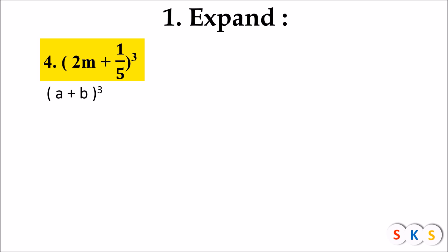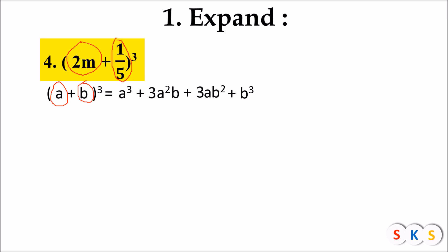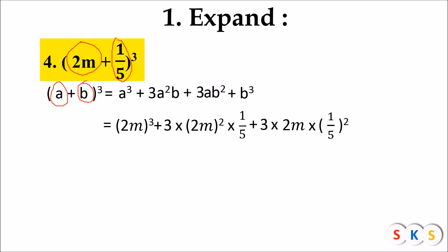Next question: (2m + 1/5) the whole cube. We use the formula (a + b)³ = a³ + 3a²b + 3ab² + b³. Here a = 2m and b = 1/5. Substituting: (2m)³ + 3 × (2m)² × (1/5) + 3 × 2m × (1/5)² + (1/5)³.